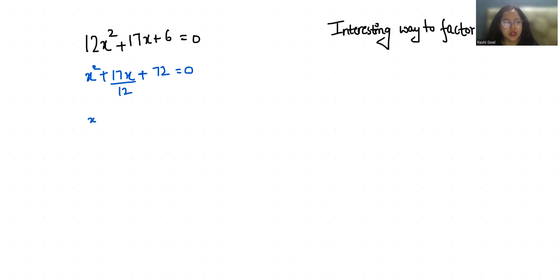plus this 17x + 12, I can write it as 8x + 12 plus 9x by 12 plus 72 equals zero.